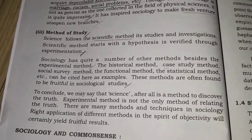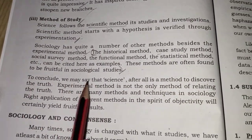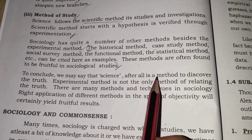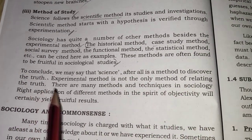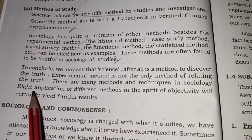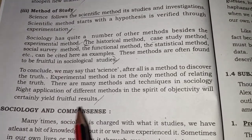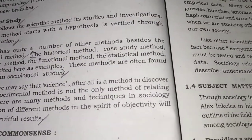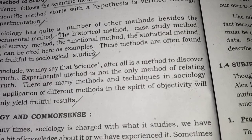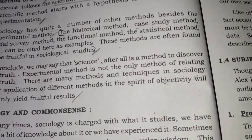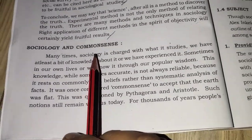To conclude, science is a method of discovering the truth, and the experimental method is not the only method of arriving at truth. There are many methods and techniques in sociology. The application of different methods in the spirit of objectivity will certainly yield fruitful results. So we may say that science is a method and experiment is not the only way; we can apply various techniques in sociology and get valid answers.